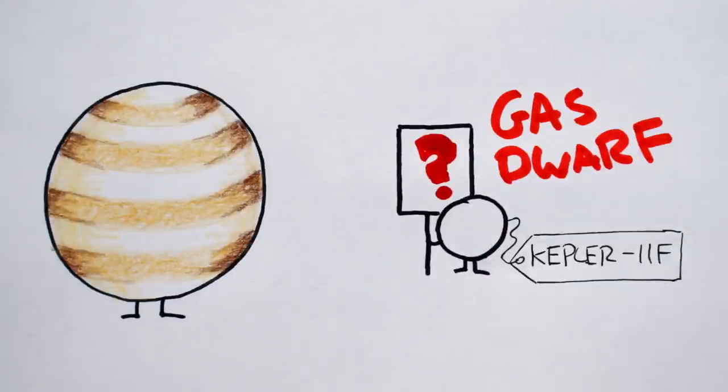Kepler-11f is a good example. Its mass is about 2 times that of Earth's, but its density is comparable to Saturn, so we think it's made of a small rocky core surrounded by a liquid ocean and a thick hydrogen and helium atmosphere. These worlds are prone to atmospheric loss through hydrodynamic escape and stellar winds and as a result are usually found far out in their systems, well out of harm's way.